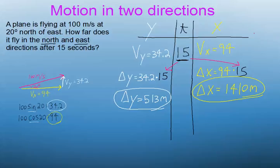Anyway, the calculations end up being pretty simple. In the Y direction, if it went 34.2 meters every second and it did that for 15 seconds, then it traveled 513 meters north. And if we want to know how far east it went, then it's just going to be 94 meters per second times 15 seconds, and you get 1410.